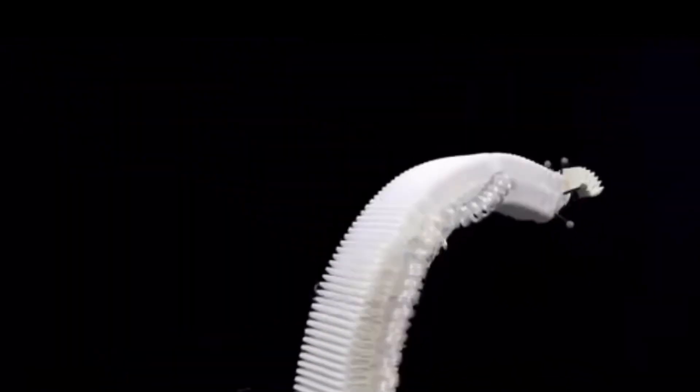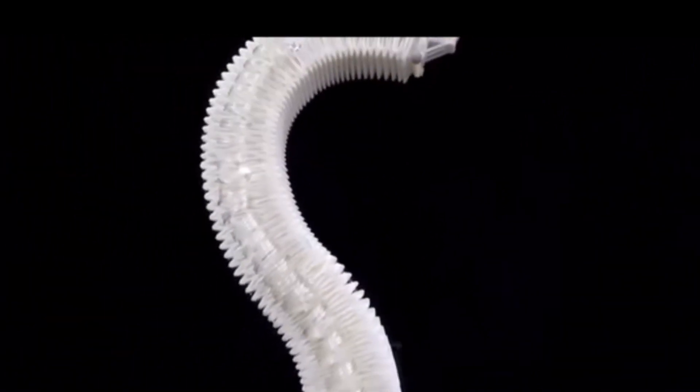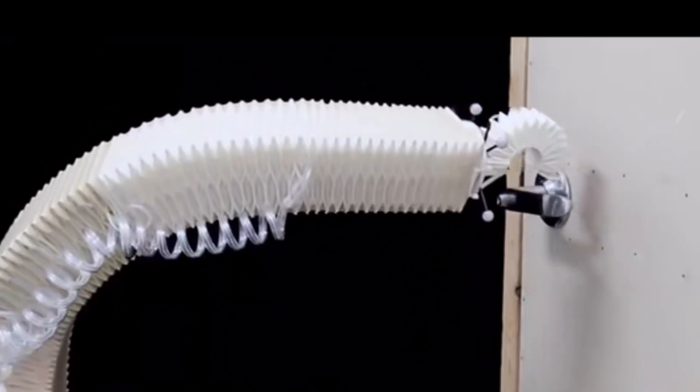This soft robotic arm can easily complete multiple control tasks in daily life, such as opening doors, drawers, cleaning windows, and twisting bottle caps.